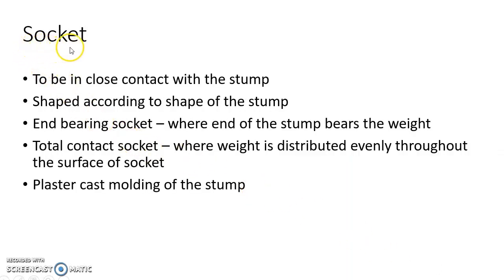Now let us see about the socket in detail. The aim of the socket is to be in close contact with the stump. The socket is shaped according to the shape of the stump. There are two types of sockets: end bearing socket and total contact socket. In case of end bearing socket, the end of the stump bears the weight. In case of total contact socket, the weight is distributed evenly throughout the surface of the socket. Plaster cast molding of the stump is done before attaching the socket to provide better attachment.